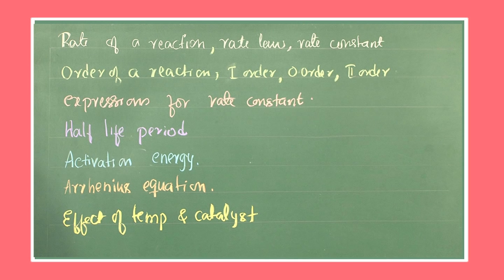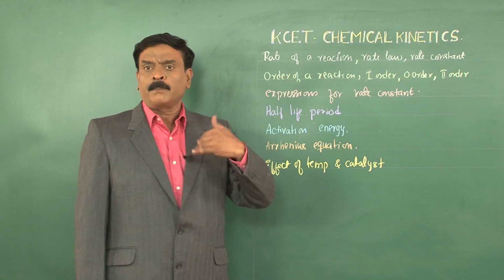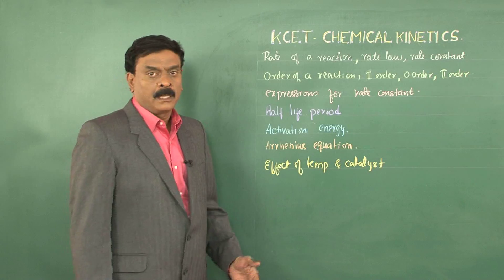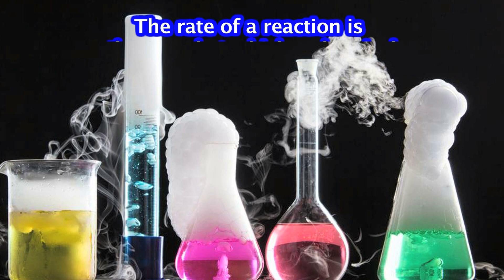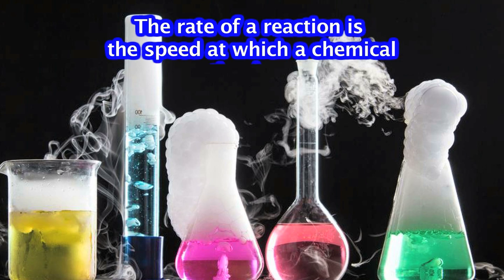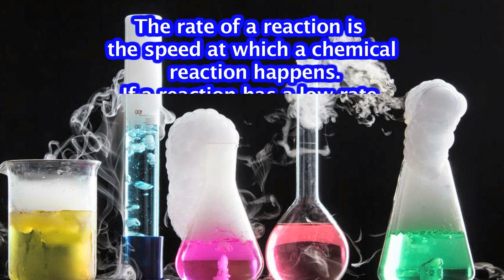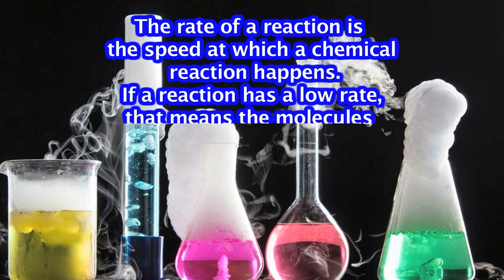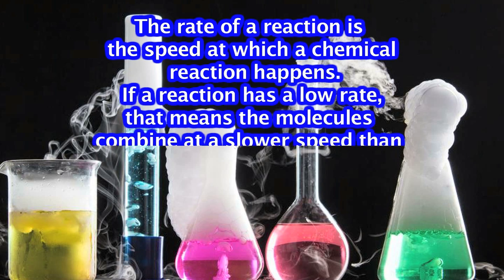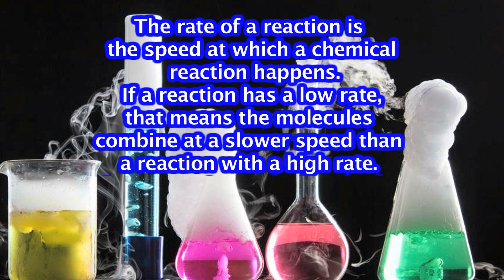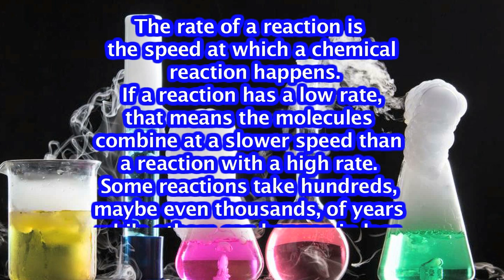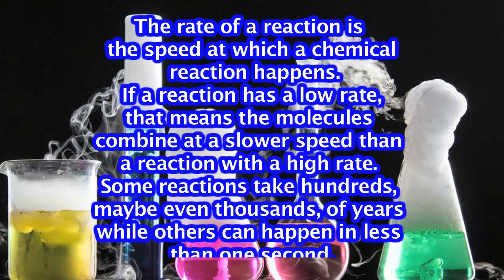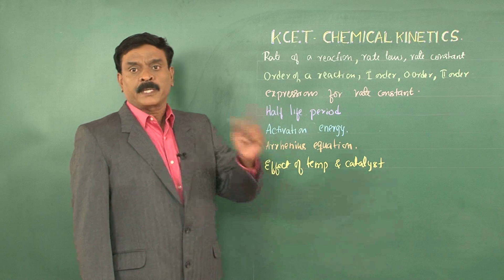Coming to the introduction to Chemical Kinetics: in Thermodynamics, we come to know whether a reaction is spontaneous or not. Whereas in Chemical Kinetics, we will be able to understand the rate at which a reaction takes place, and if a reaction is slow or fast, what are the factors which affect the rate of a reaction?